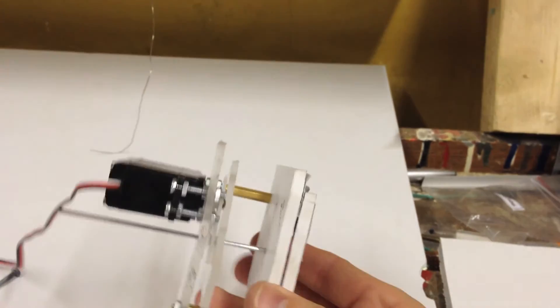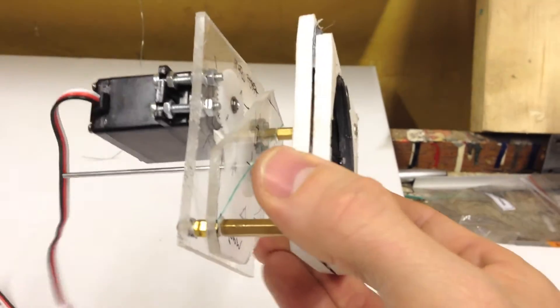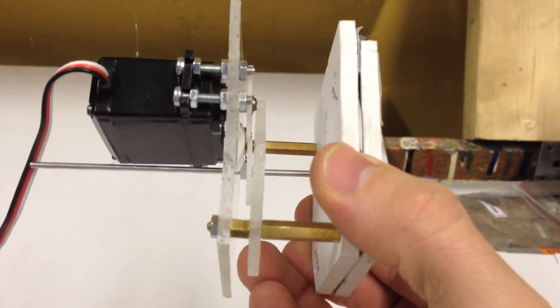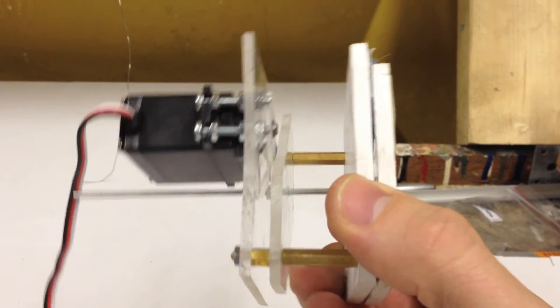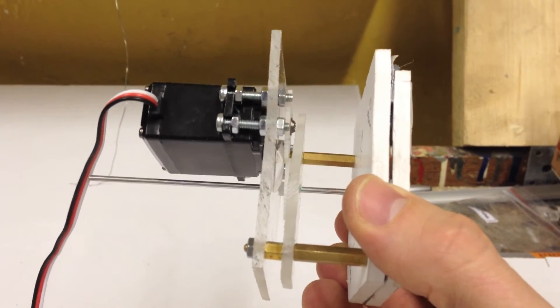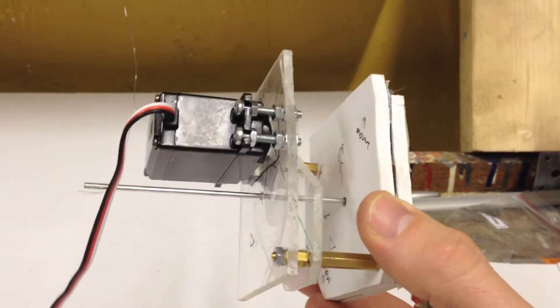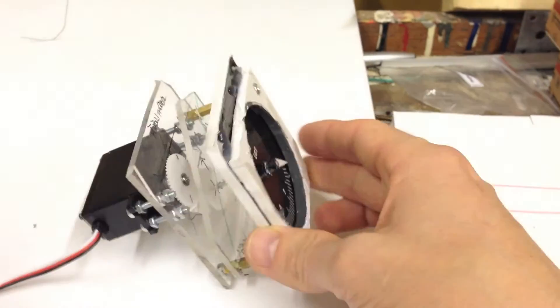So this is the gauge. From the back here we have the servo, then the plate to make sure the shaft doesn't move and gears are kept in place. Two centimeters of space and then the two layers of Fomalux and that's more or less it. That's the gauge.